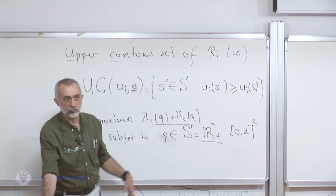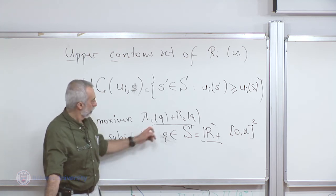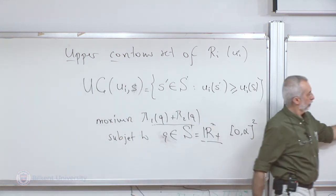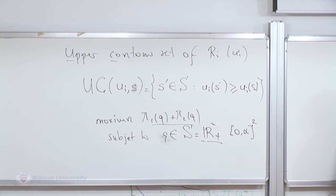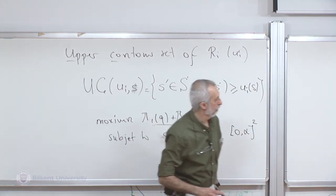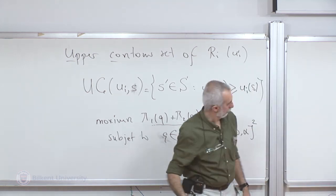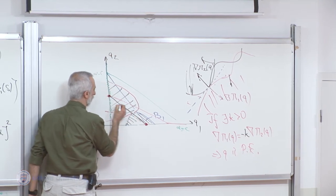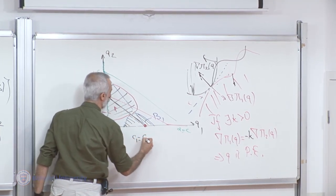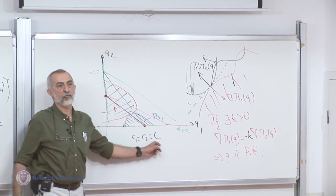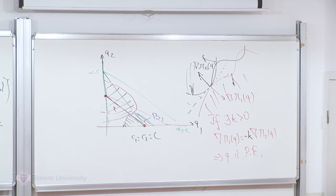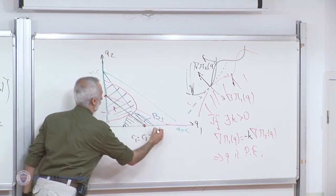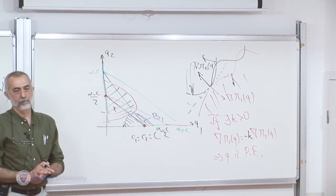I'll leave it as an exercise. It's a simple calculus problem. The answer will be all the points on a particular line. When c1 equals c2 equals c — when both firms have the same constant marginal cost — the set of Pareto efficient allocations would be the points on this line.